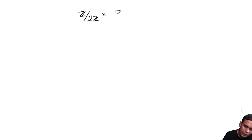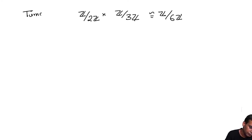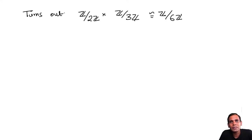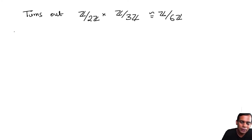Let's look at another example: Z mod 2Z cross Z mod 3Z. It turns out that this group is isomorphic to Z mod 6Z. This is a special case of a very ancient theorem going back to 3rd-century China — the Chinese Remainder Theorem, attributed to the mathematician Lao Tzu. I am going to explain this theorem and its proof using a few simple ideas from group homomorphisms and a certain counting result.